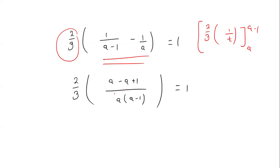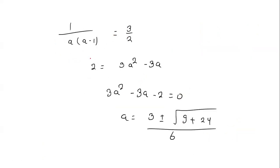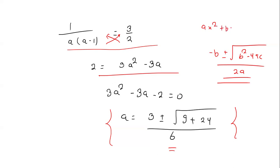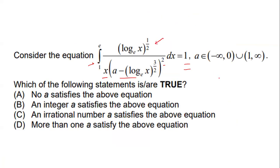Since the integral equals 1, we can simplify by taking the common base as a(a minus 1). After cancellation, the numerator gives 1, and the equation takes a simplified form. Cross multiplying yields a quadratic equation, and applying the quadratic formula — minus b plus or minus root of (b squared minus 4ac) divided by 2a — we get a = (minus 3 plus or minus root of (9 + 24)) divided by 6.